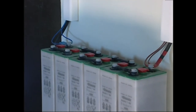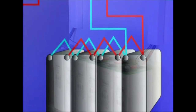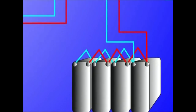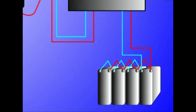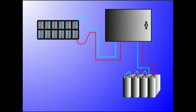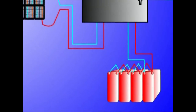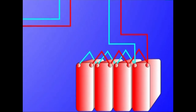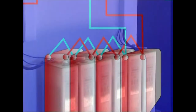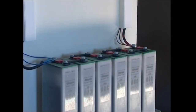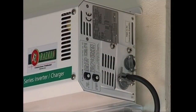Produzitutako energia elektrikoa gordetzen du metagailuak, eguzkirik ez dagoenean erabili ahal izateko. Metagailuaren ahalmena ampere-ordutan neurtzen da. Hau da, borneen arteko tentsiori intentxitate jakin bat emateko gai diren ordu kopurua. Sistema fotoboltaikoetan, instalazioaren autonomia bost egun ingurukoa izaten da.